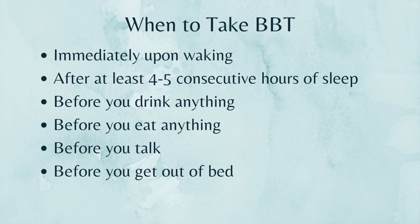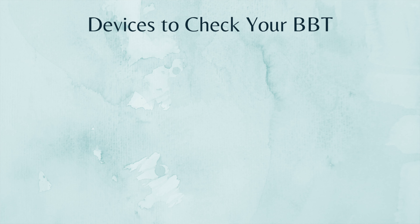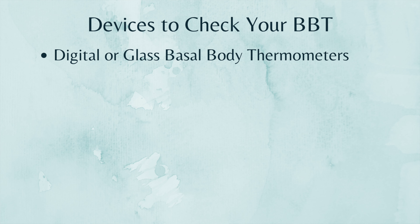Now let's talk about how you check your basal body temperature. First, you choose a device, and there are a lot of different devices out there. There are thermometers that can be used orally, vaginally, or underneath the armpit — and those would be digital thermometers or glass thermometers.